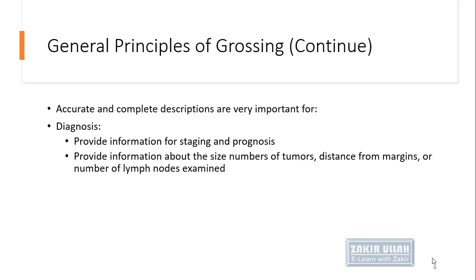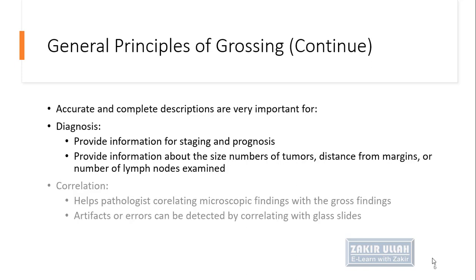Gross examination also provides information about the size of the tumor, the distance from the margin — whether it has crossed the margin or is within the margin of the tissue or organ — and the number of lymph nodes examined and whether metastases are present in those lymph nodes.